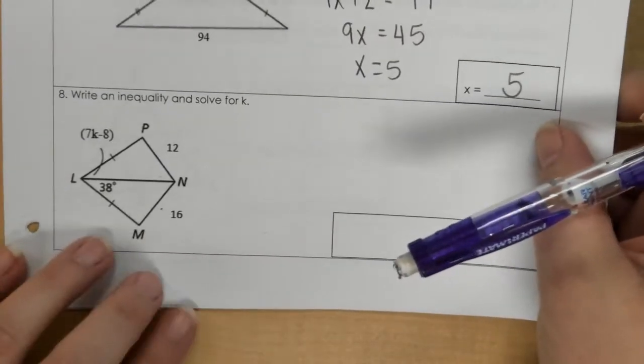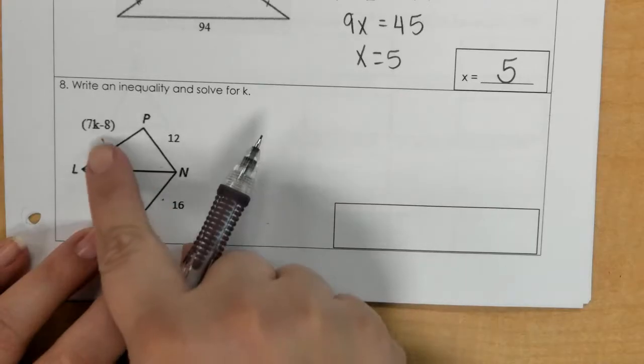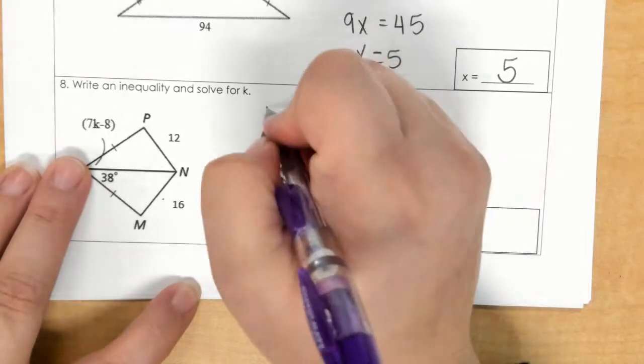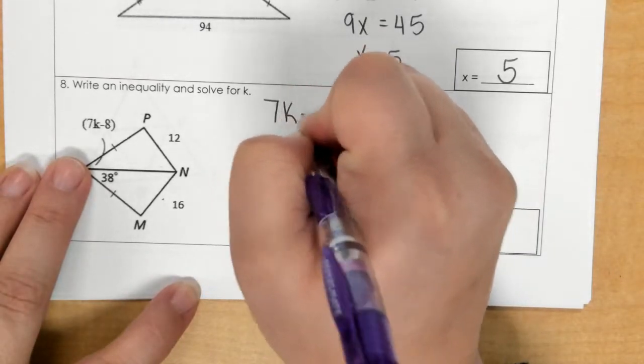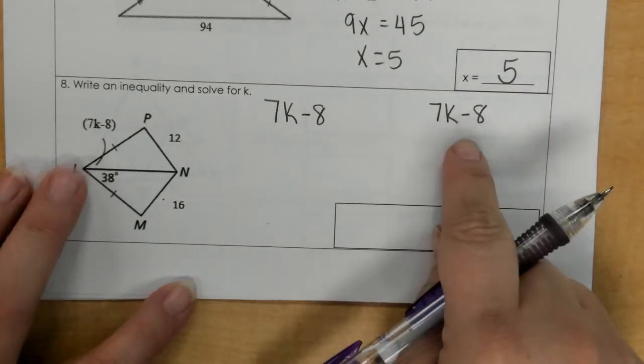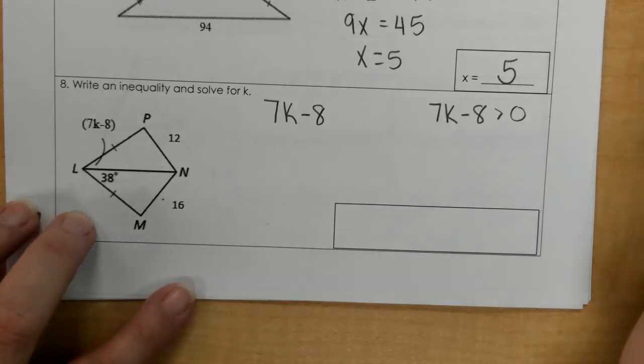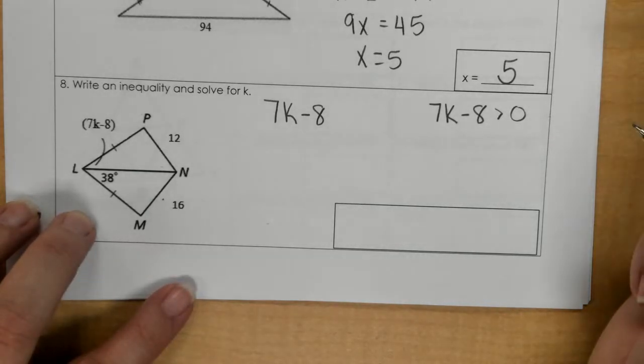For number 8, first thing, our expression is the 7k minus 8. So let's go ahead and jot that down twice. Now, the second part will be easy because this is always greater than 0.